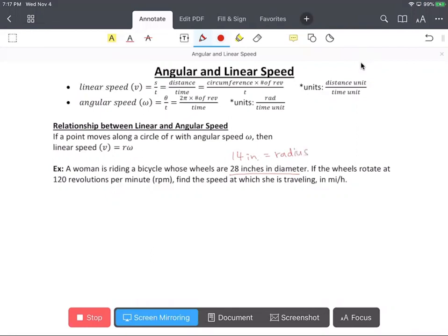We can find our angular speed, which is omega equals 120 revolutions per minute times 2 pi radians per revolution. The revolutions cancel out and this equals 240 pi radians per minute.